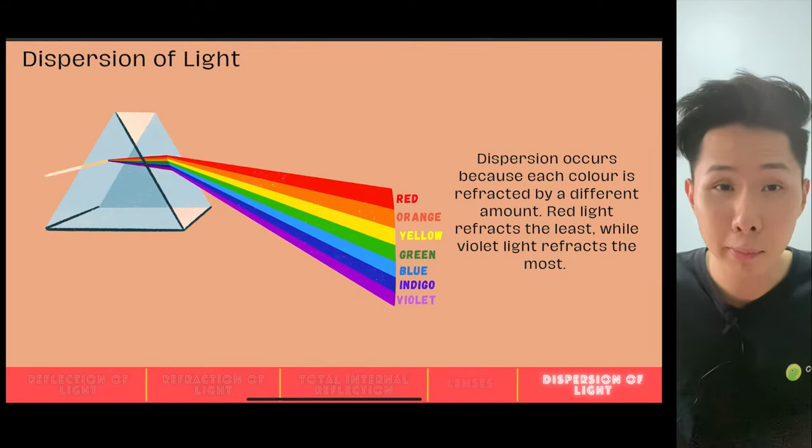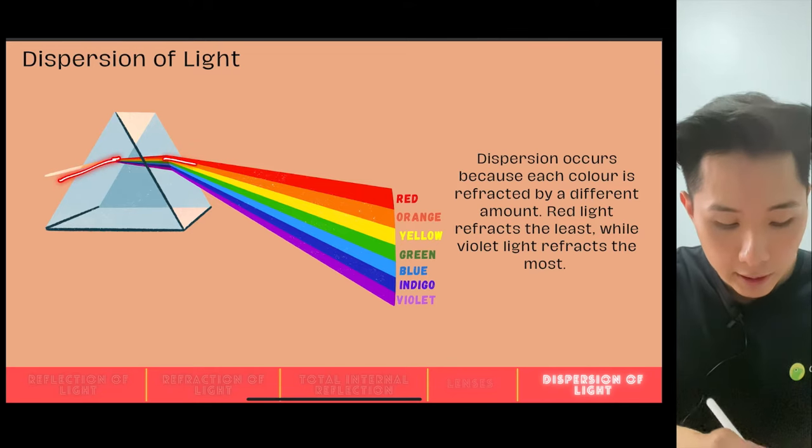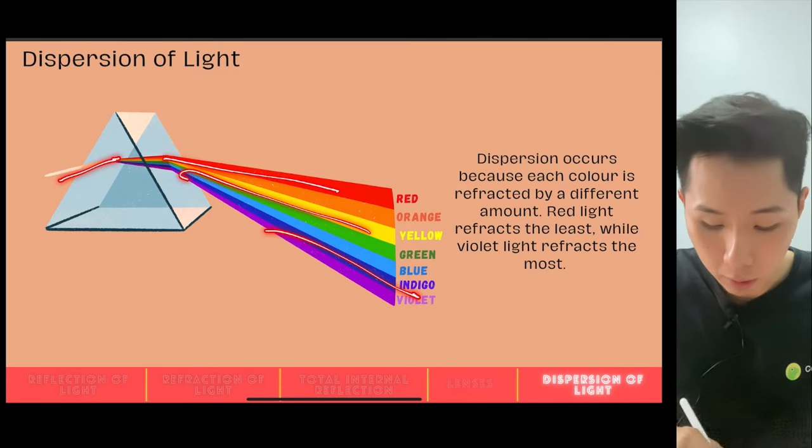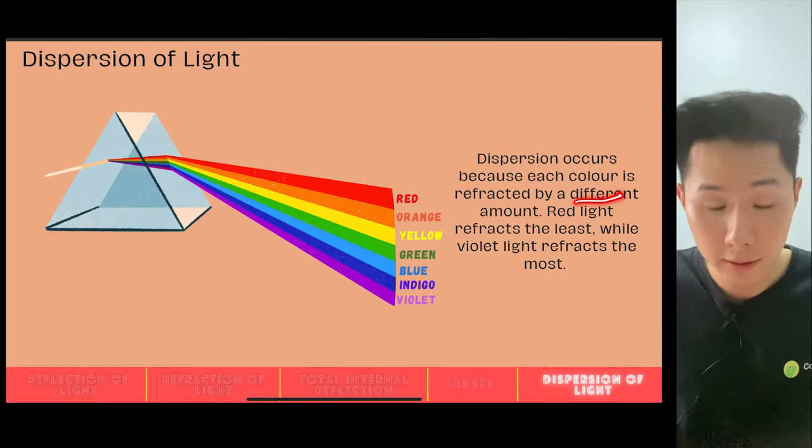In chapter 13, we learned about dispersion of light, and we know that light consists of different colors. So when white light travels through a prism like that, different colors of light will appear, and this is because each color is refracted by a different amount.